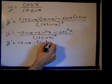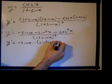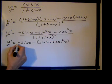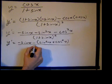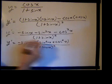And that's the same difference with the negative cosine squared of x, and that's all over 1 plus sine x, quantity squared.